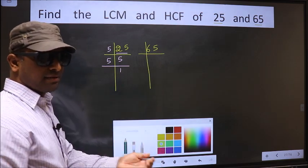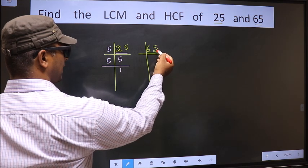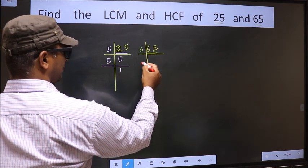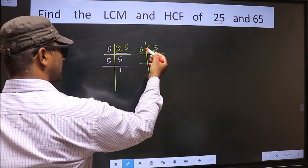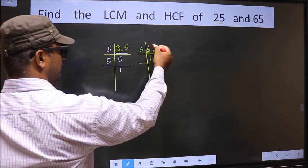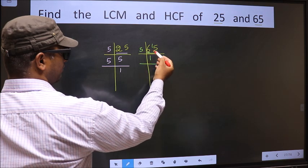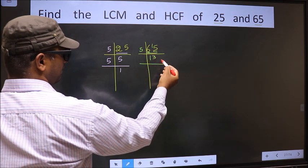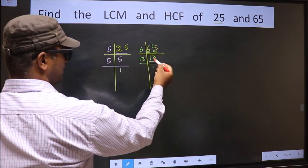Now the other number, 65. Last digit 5, so we take 5 here. First number 6. A number close to 6 in 5 table is 5 once 5. 6 minus 5, 1. 1 carried forward making it 15. When do we get 15 in 5 table? 5, 3 is 15. Now here we have 13. 13 is a prime number. So 13 once 13.